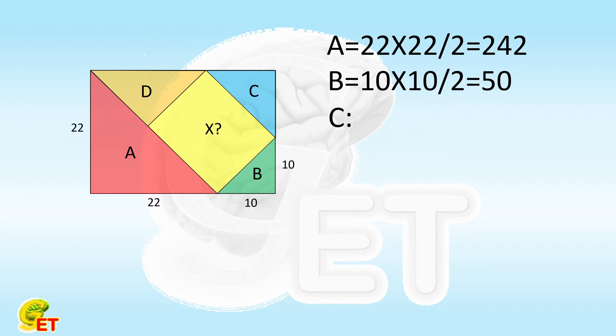For the area C, we need to first calculate the side length, which equals 22 minus 10, equals 12. So its area is 12 times 12 over 2, equals 72.